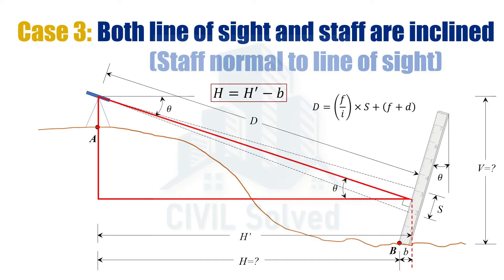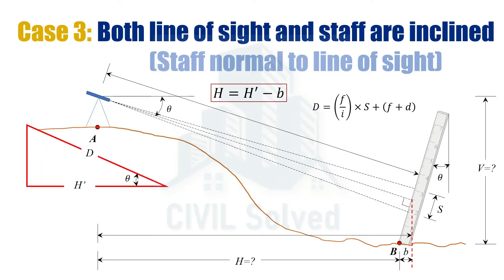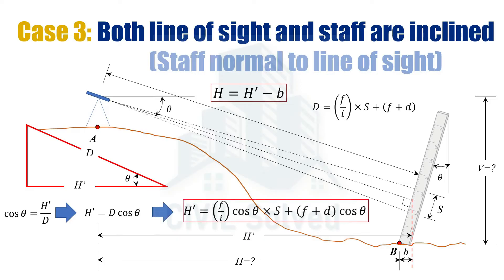To calculate H, we need to subtract B from H'. So we first calculate H'. H' is the base of this right angle triangle. We take the trigonometric ratio containing the hypotenuse and base, which is cos θ. So cos θ = H' / D. To determine H', the formula becomes H' = D cos θ. Putting the value of D into this equation gives us the formula for H'.